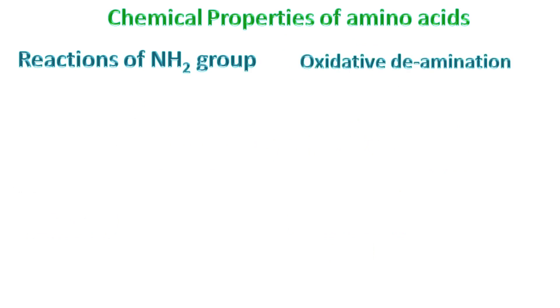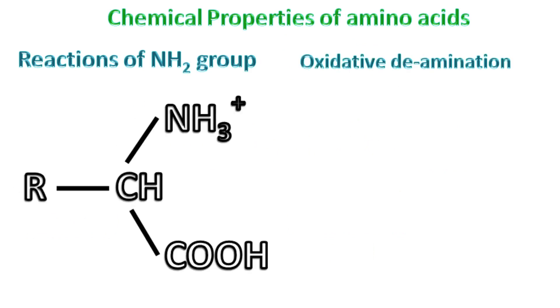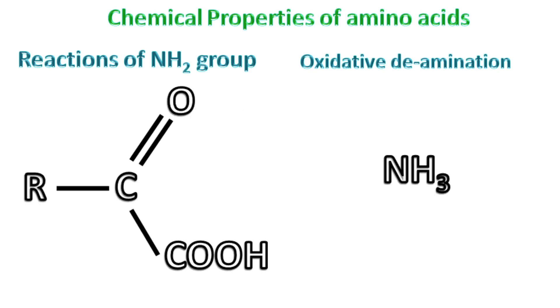Oxidative deamination: in this reaction, in the presence of oxygen, the amino group reacts with oxygen and releases ammonia. This results in the formation of a keto acid.